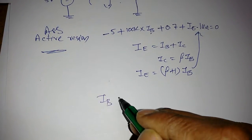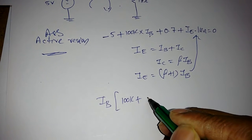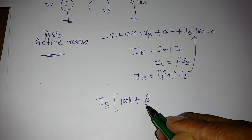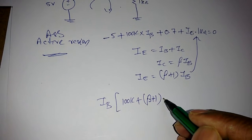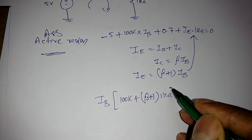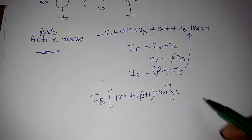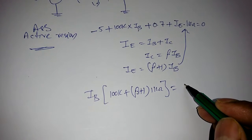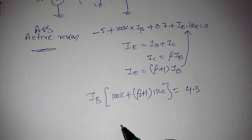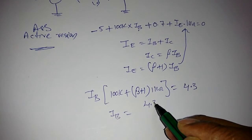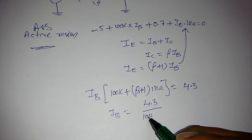So IB × [100kΩ + (β + 1) × 1kΩ] = 5 - 0.7 = 4.3. Therefore, IB = 4.3 / [100kΩ + (β + 1)kΩ].